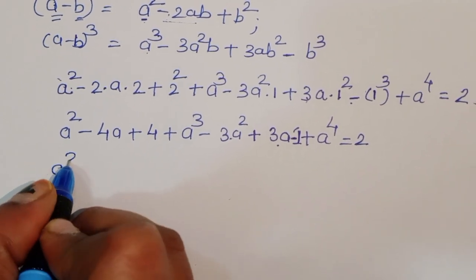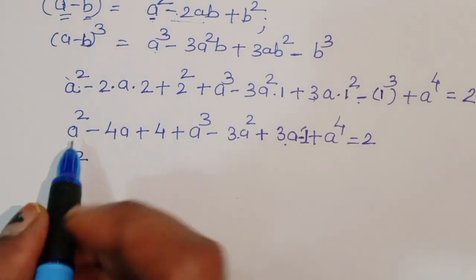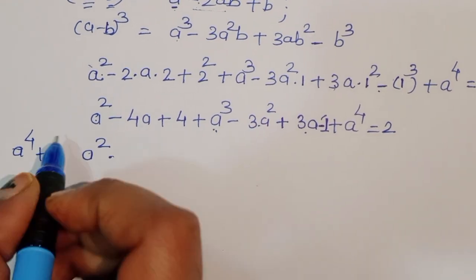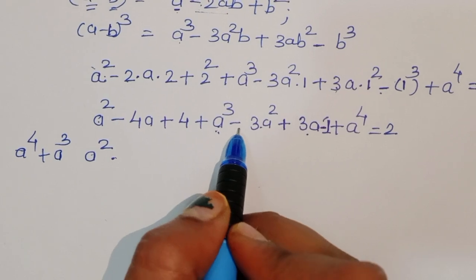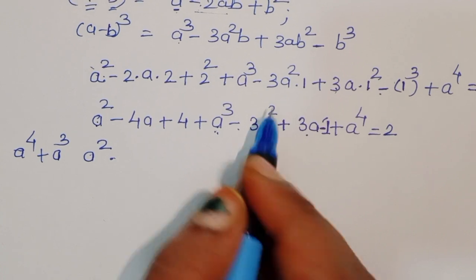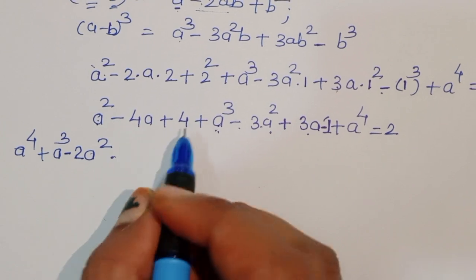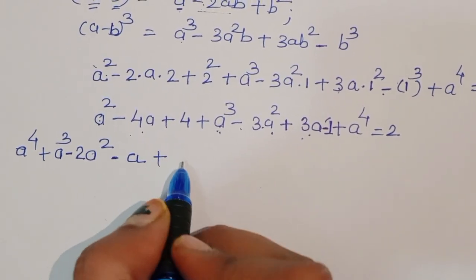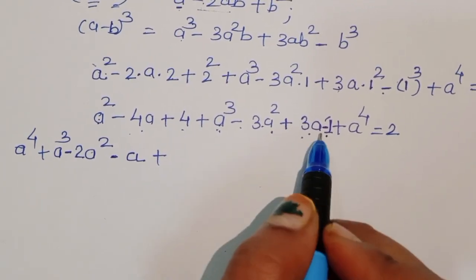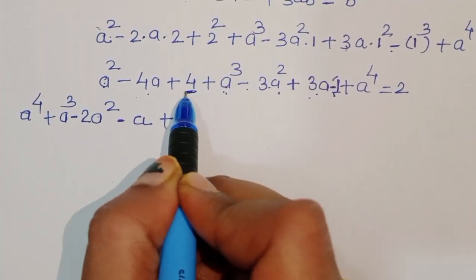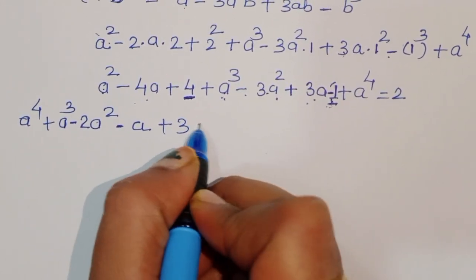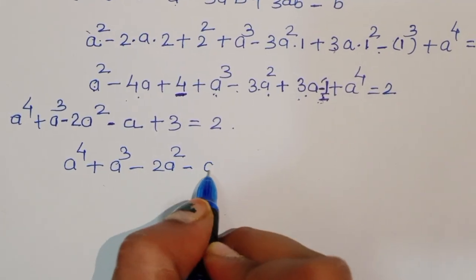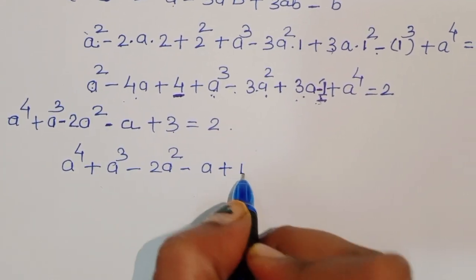Now we arrange the terms. Collecting like terms: a⁴ + a³ + (a² - 3a²) + (-4a + 3a) + (4 - 1) = 2, which simplifies to a⁴ + a³ - 2a² - a + 3 = 2. Moving 2 to the left side: a⁴ + a³ - 2a² - a + 1 = 0.